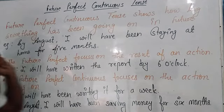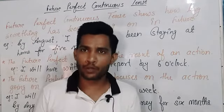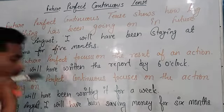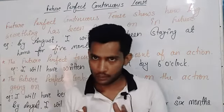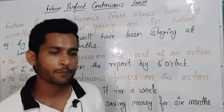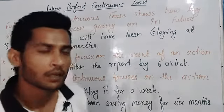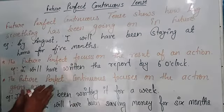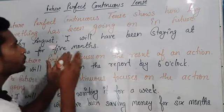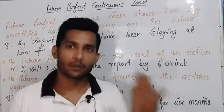Future perfect continuous tense shows how long something has been going on in future — for how much time an action will have been going on. Look at the example: 'By August, I will have been staying at home for five months.' The pandemic of COVID-19 started in March and we have been at home since that time, but till the end of August I will have been staying at home for five months. Here we are focusing on the continuity of an action with duration.